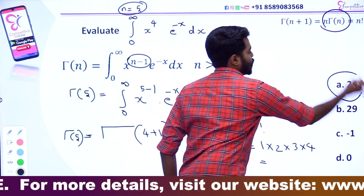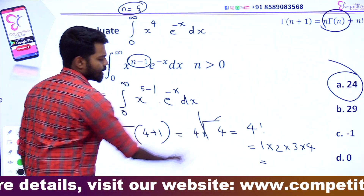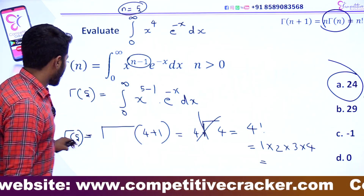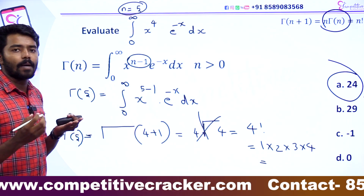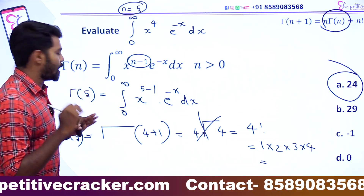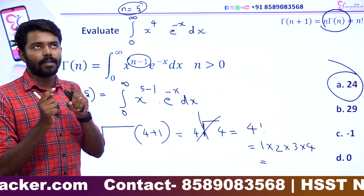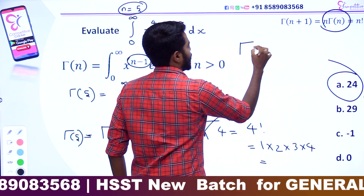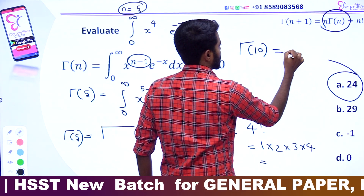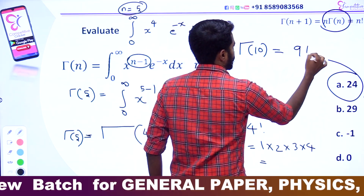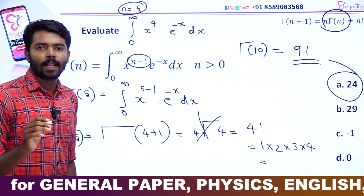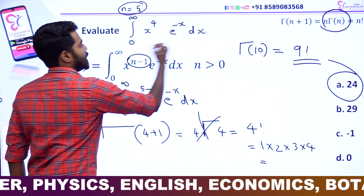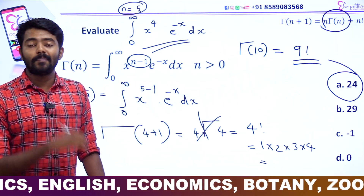That is 4 into gamma of 4, which equals 4 factorial, that is 1 into 2 into 3 into 4, which is 24. The option is 24. So, gamma of 5 equals 4 plus 1, so 4 factorial is the answer. Where gamma of 10 is equal to 9 factorial. Clear? We make the same exercise. If you have the same, to our special functions, we can find out.